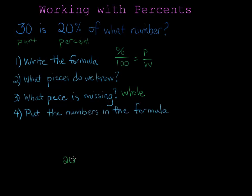Now we put the numbers in the formula. 20 is the percent, so it goes over 100. And it equals 30, which is the part, so that goes on top, over W, because we don't know what the whole is.